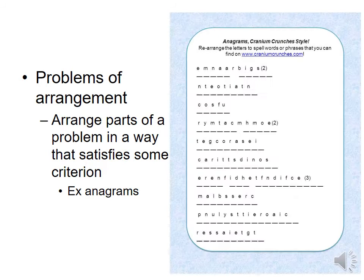The third type is a problem of arrangement — you have to reorganize whatever you're working with so it satisfies a criterion. An anagram is an example of an arrangement problem. Setting up a seating assignment for a wedding or a holiday dinner is another. These problems translate into how we classify real-world problems as well.